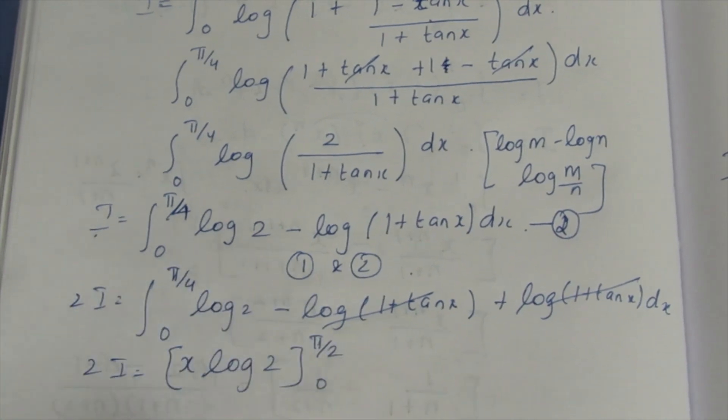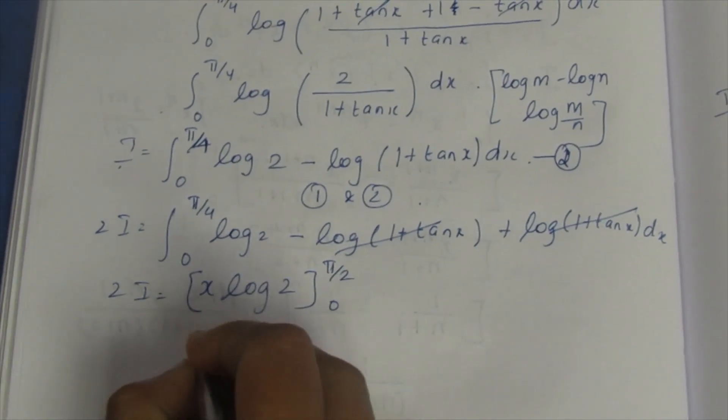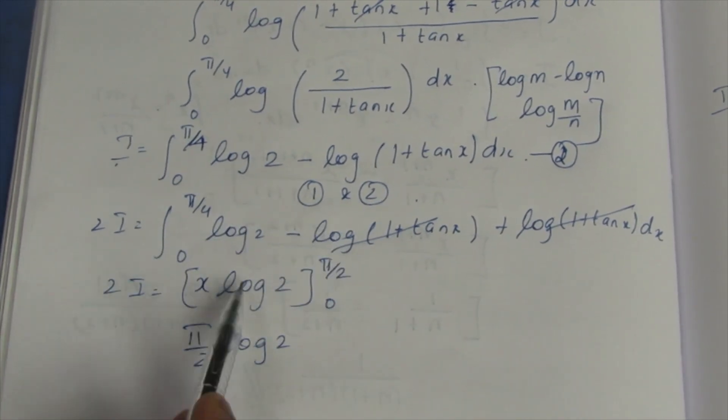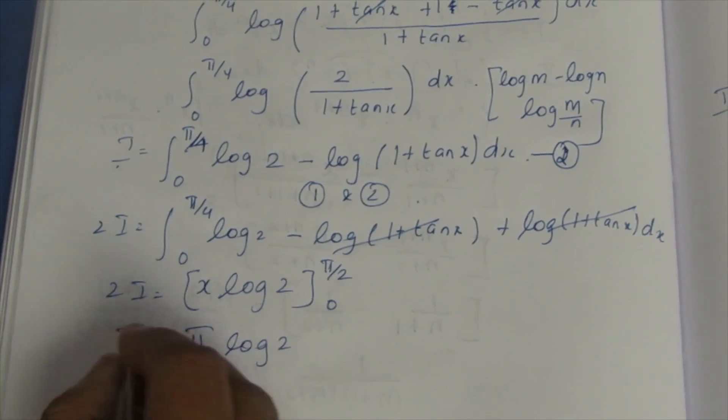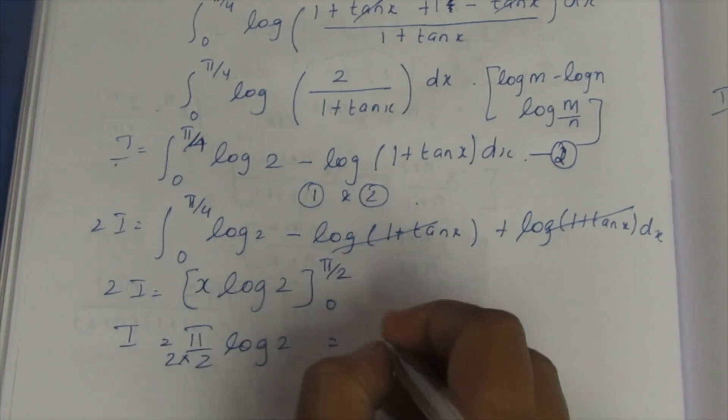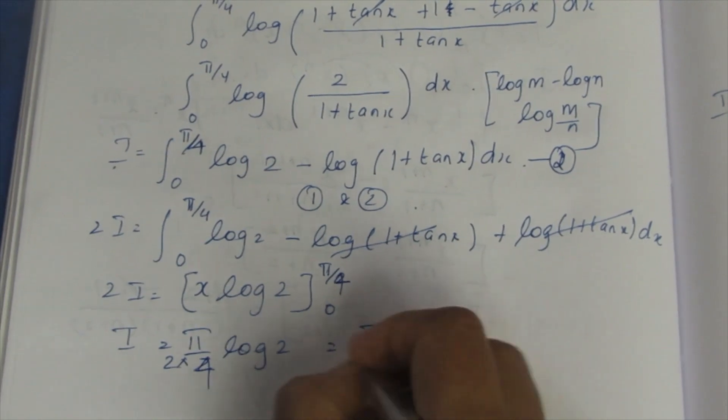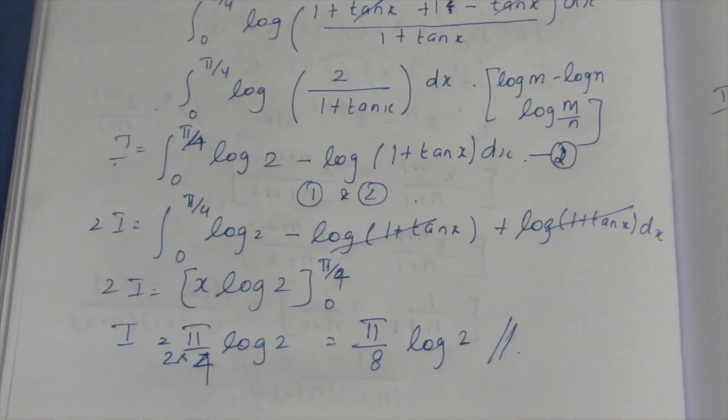The constant value, we know that integration of a constant value is x. Write the coefficient as it is, write x to it from 0 to π/4. Substituting the value, the upper value minus lower value, this becomes π/4 log 2 minus 0 will become 0. Bringing this 2 to the denominator, it comes as divide 2. Your final answer here is π/8 log 2 is your final answer for the sum.